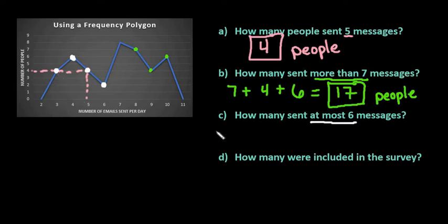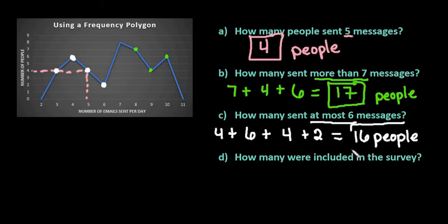So we can see that four sent three plus six sent four plus four sent five messages and we can see that two people sent six messages. So if we add this together we get ten plus four plus two which gives us a total of 16 people sent six messages.